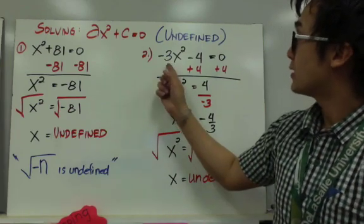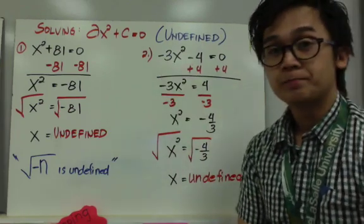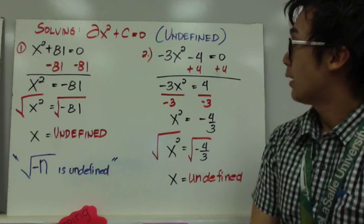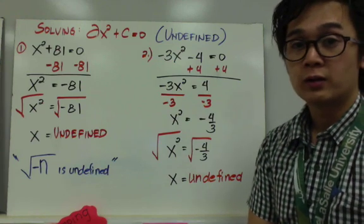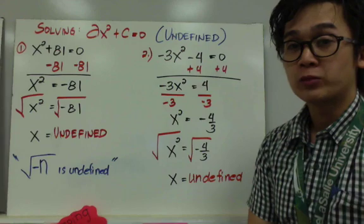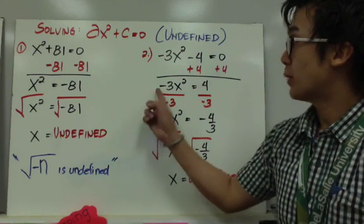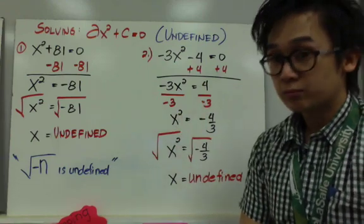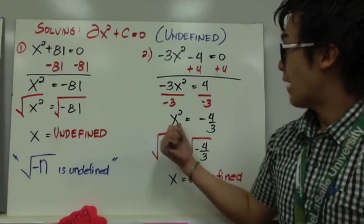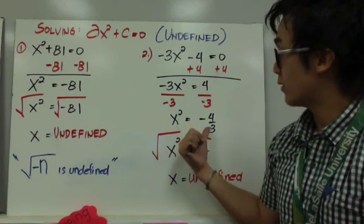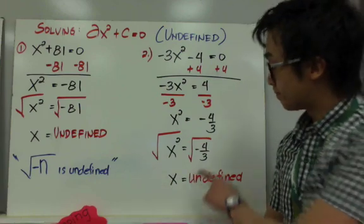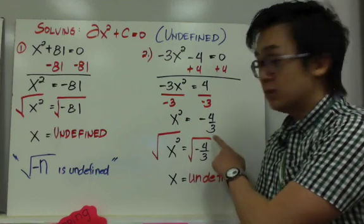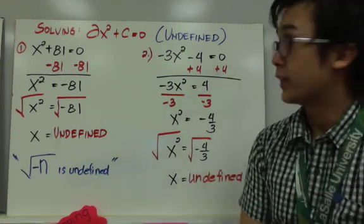For the next undefined example, we have negative 3x squared minus 4 equals 0. We add 4 on both sides to get negative 3x squared equals 4, then divide both sides by negative 3 — make sure you divide by negative 3, not positive 3, as that is a common error. This gives x squared equals negative 4 over 3. Taking the square root of both sides, we have a negative fraction inside the radical, so x is also undefined.